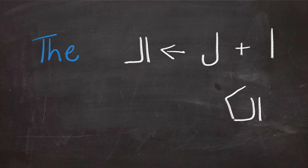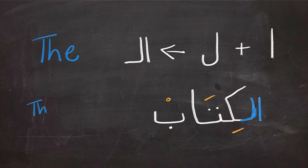If we add alif to lam, you're going to have al, which means the, and this is actually a very common combination like in the example al-kitab. Al-kitab means the book.